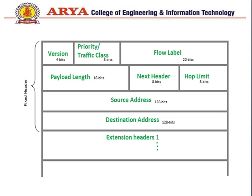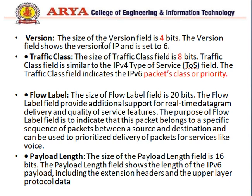Similar to the IPv4 header, the IPv6 header has some different fields. The version field is 4 bits. Next is the traffic class field, which defines the type of service being used — the class of the packet — and it is 8 bits.